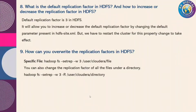The next question is: how can you override the replication factor in HDFS for a specific file? If you want to change the replication factor for a specific file, the command is: hadoop fs -setrep -w followed by the number of copies you want, and then your HDFS file path, for example /user/cloudera/filename.